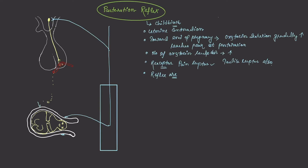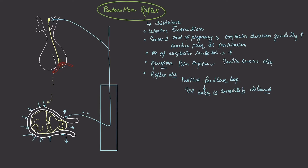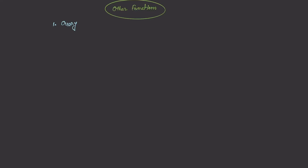Oxytocin acts on receptors in the uterine myometrium, causing myometrial contraction and pushing the presenting part of the baby further downwards, which further stretches the cervix. This sends more sensory information upward, causing more oxytocin release and more contraction — a positive feedback loop that continues until the baby is completely delivered. This is also a neuroendocrine reflex, where the efferent loop is formed by the endocrine hormone oxytocin.